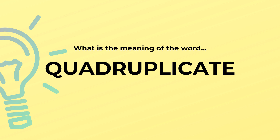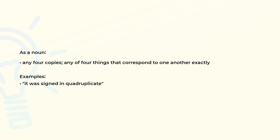What is the meaning of the word quadruplicate? As a noun: any four copies; any of four things that correspond to one another exactly. Examples of use: it was signed in quadruplicate.